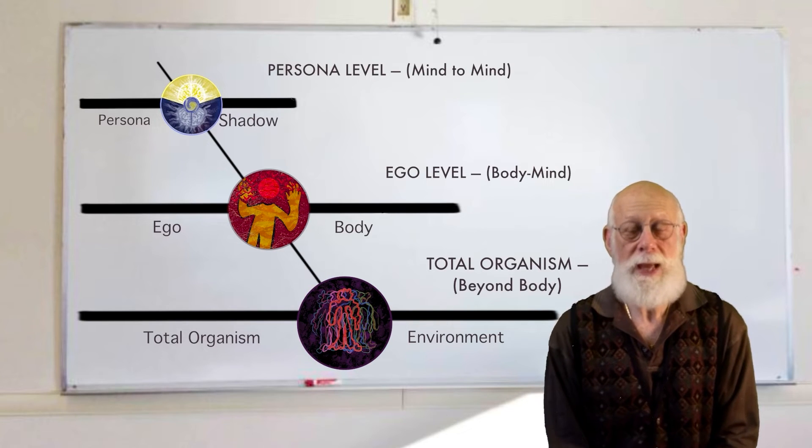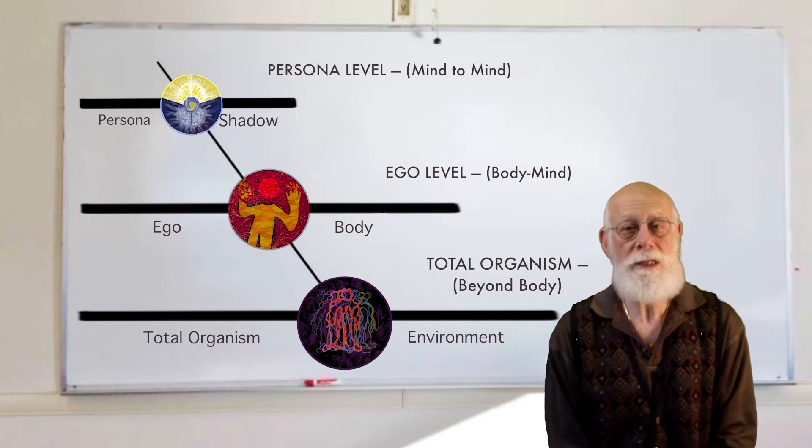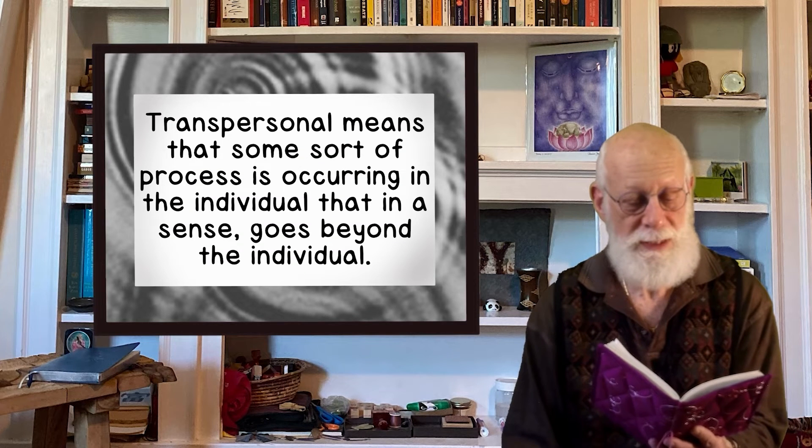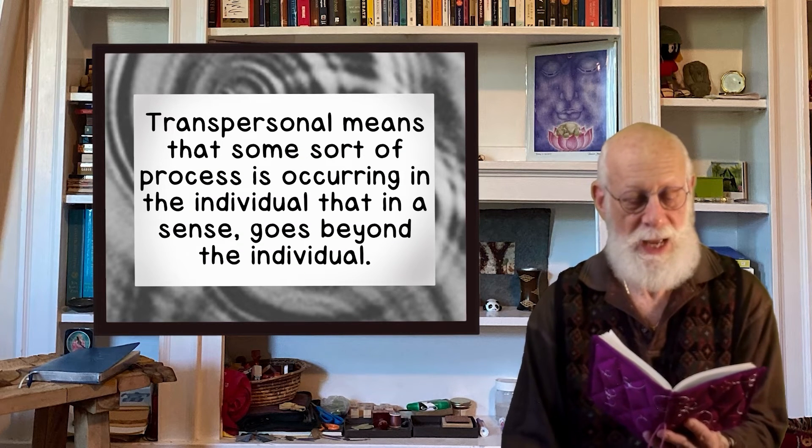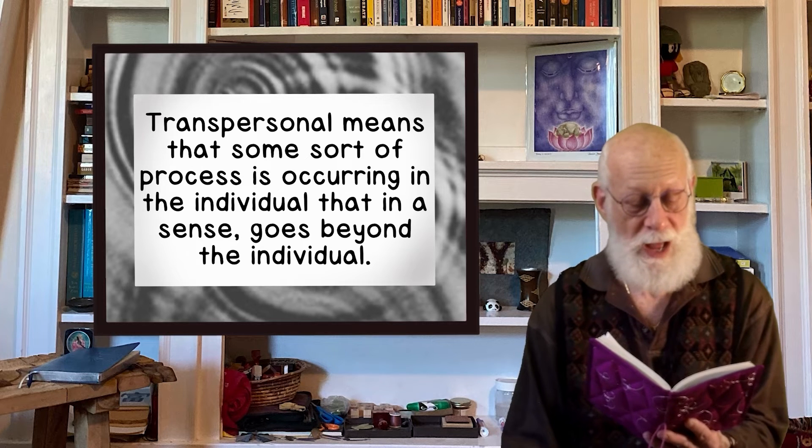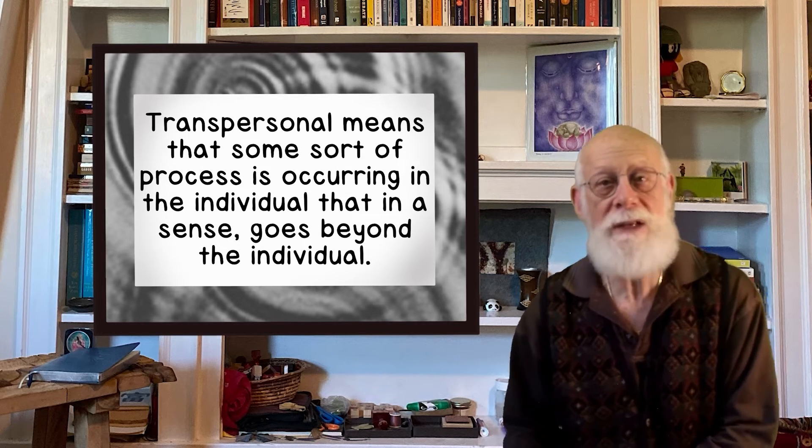Now, when we're looking at the environment, the examples I gave so far are close to where the body is. The piece now is, when does my identity end when I'm looking at vibrations and looking at energy? And that is usually called transpersonal rather than personal. Let me give you a definition from No Boundary, the book No Boundary, about transpersonal. Ken Wilber describes it really well. Transpersonal means that some sort of process is occurring in the individual that, in a sense, goes beyond the individual.